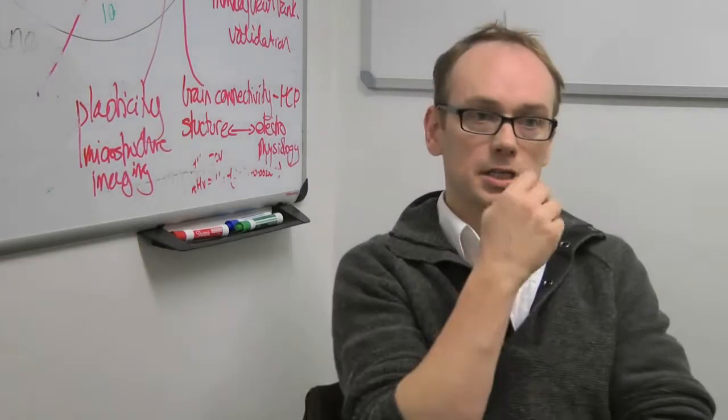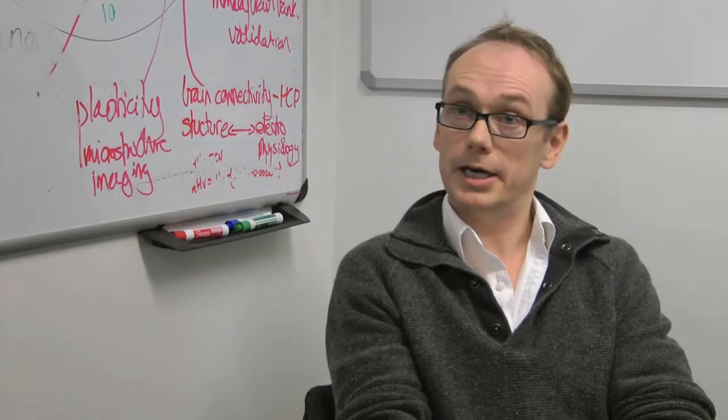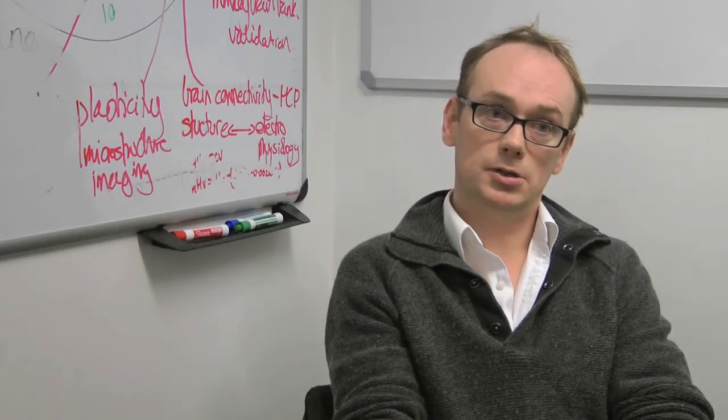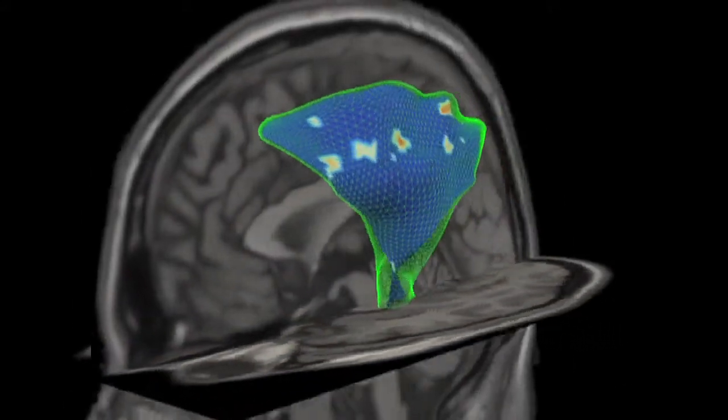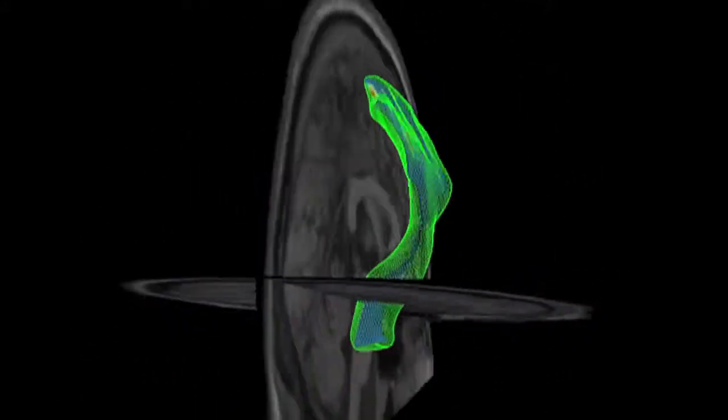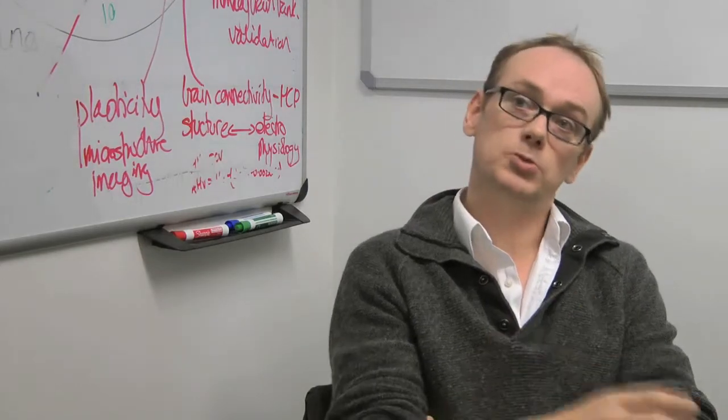So the kinds of disease which this information is useful for - one is psychiatric disorders, so things like depression or schizophrenia. And similarly we can use it for people with neurological diseases, so that's things like Alzheimer's disease or other kinds of dementia or multiple sclerosis.